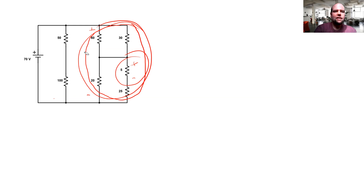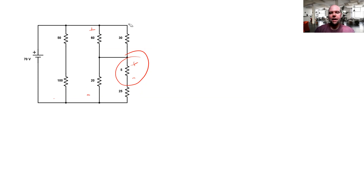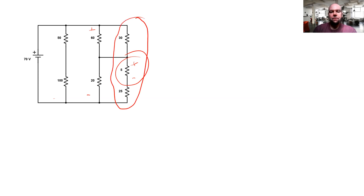Let's get back to the problem at hand. One thing might be: why can't I just apply voltage divider here directly? Well, the reason I can't apply voltage divider there is because these resistors are not in series. Two of them — the five and the 25 — are in series, but there's this pesky little wire here. So this is not a collection of components that are in series. We can't treat them separately with a voltage divider equation.